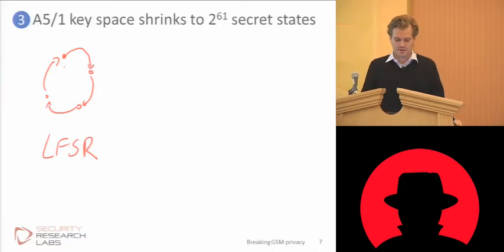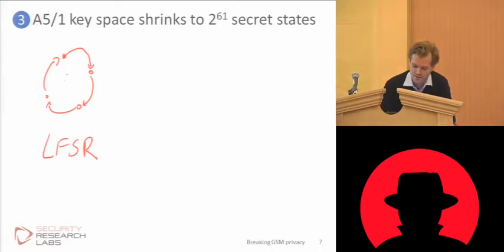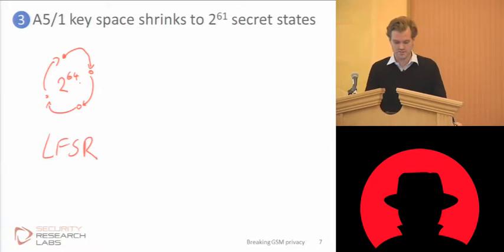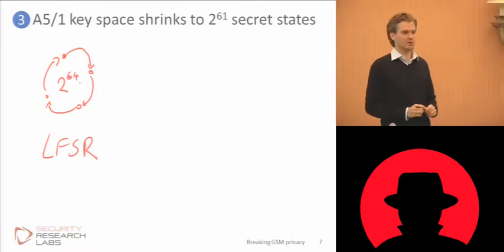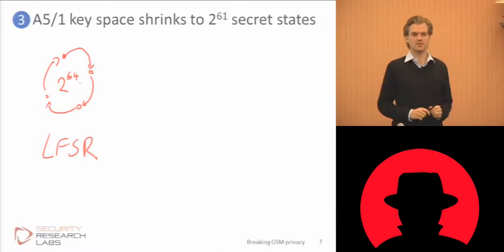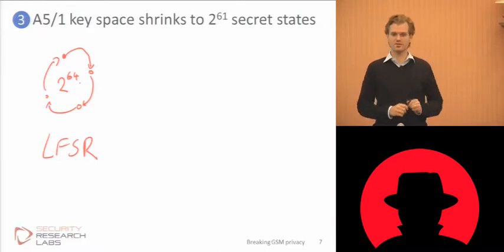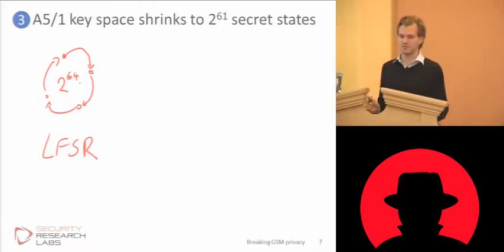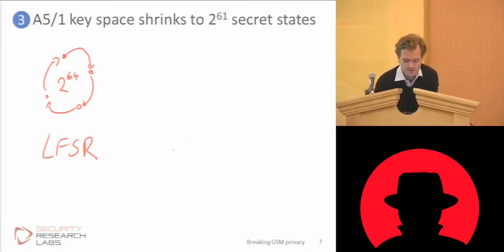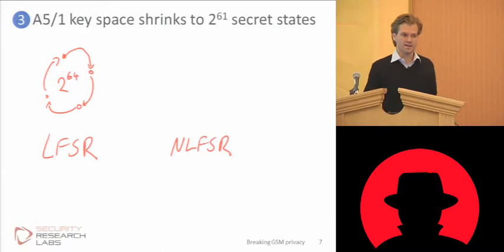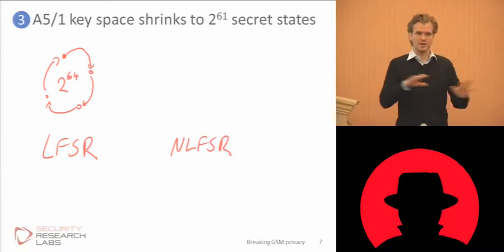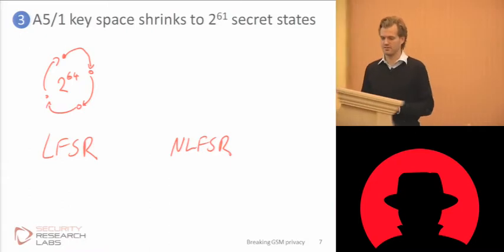If A5/1 was built from one linear feedback shift register, this circle would have a size of 2 to the 64 numbers until it wraps around. Now A5/1 isn't built from this, because early on people understood that linear feedback shift registers are statistically broken — you can use SAT solvers, linear approximation with bad filter functions, and all these things to break these. So this is disqualified to build the stream cipher. What people use instead is what I call a non-linear feedback shift register, and that's what A5/1 is built upon — it is an LFSR that's clocked irregularly, and that makes it non-linear.